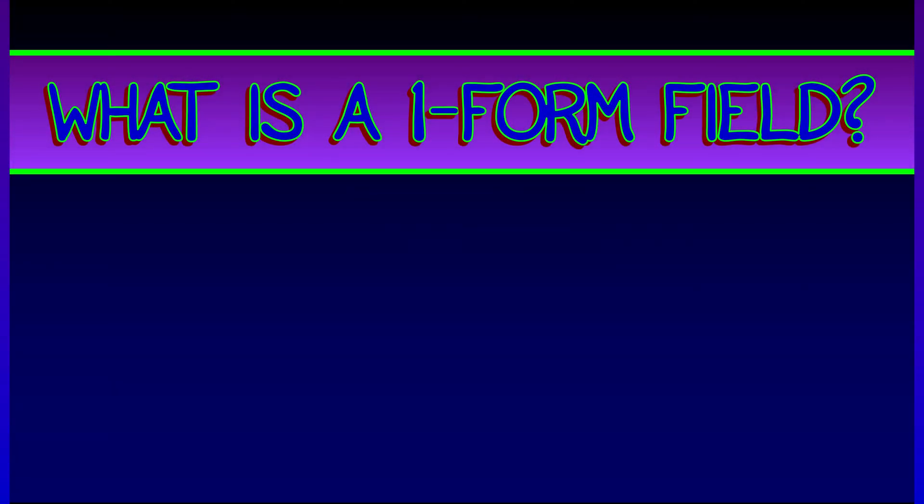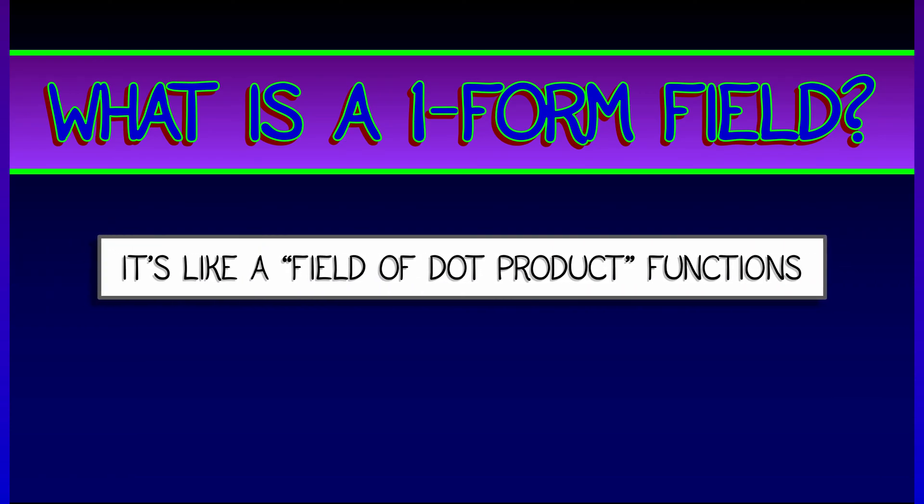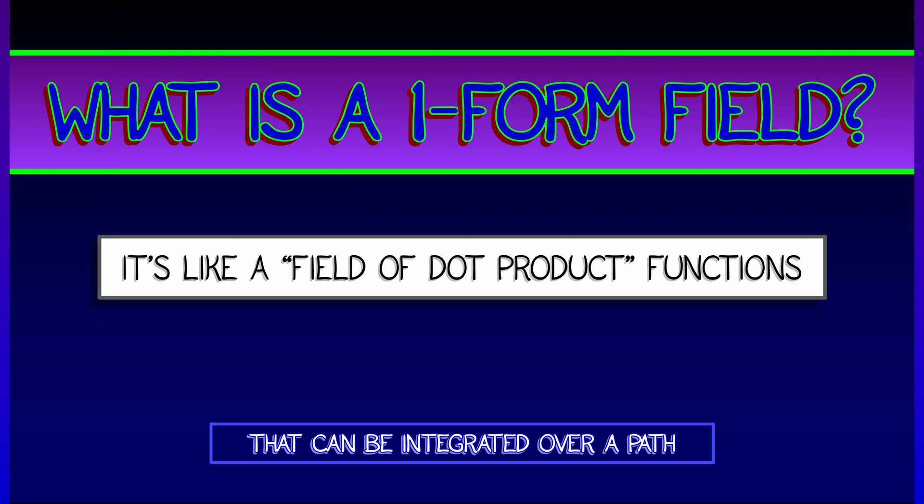All right, let's review. What's a one-form field? A one-form field is something like a field of dot product functions. And what's great about a one-form field is that you can integrate them over a path.